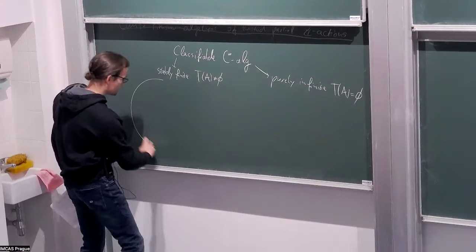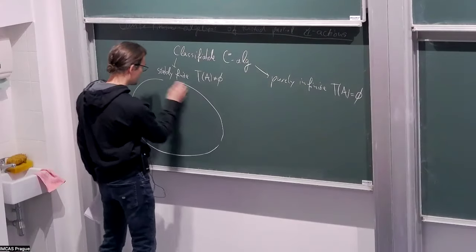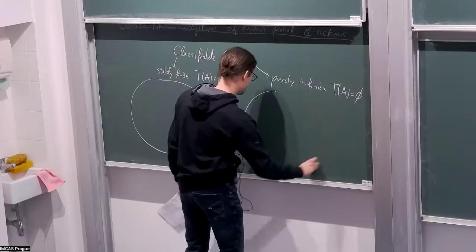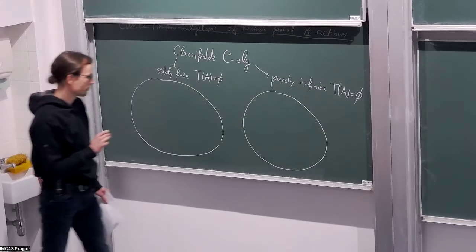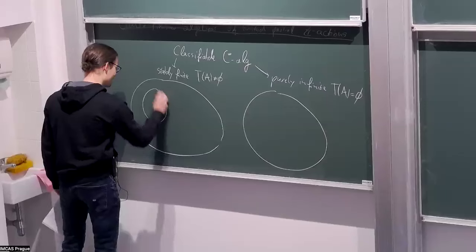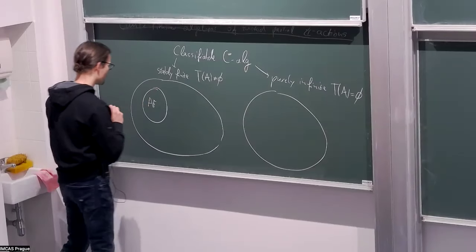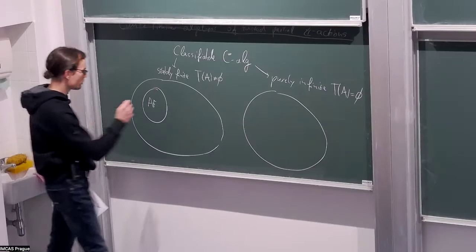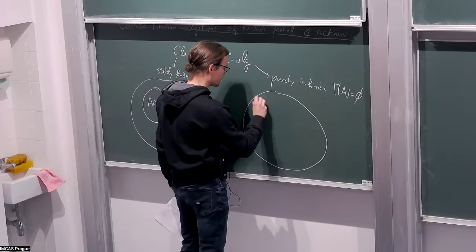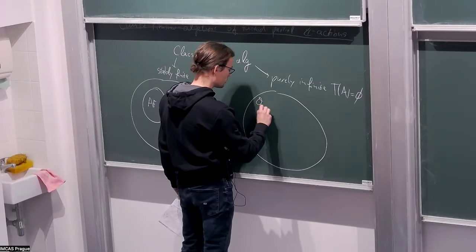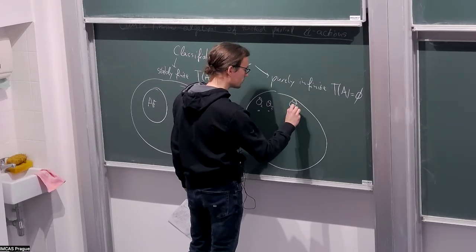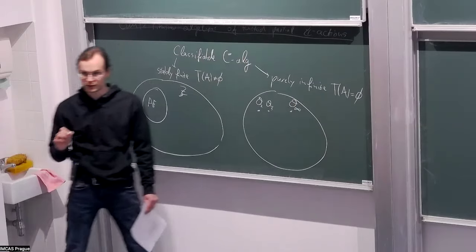This blob represents stably finite C*-algebras, and this blob represents purely infinite C*-algebras. In the stably finite region we have, for example, AF algebras and the Jiang-Su algebra, and in the purely infinite region we have the Cuntz algebras O2, O3, up to O-infinity.